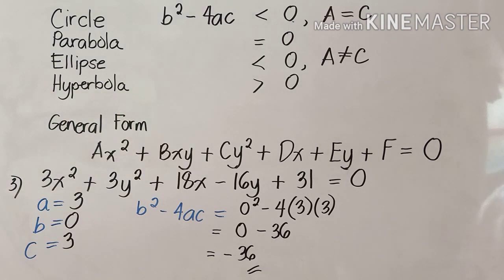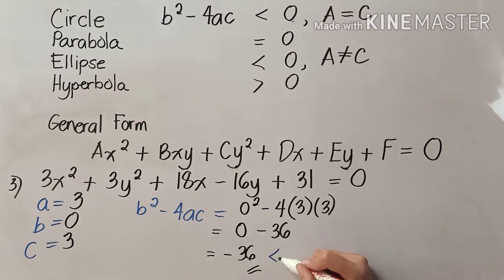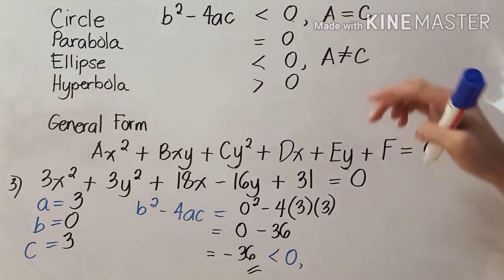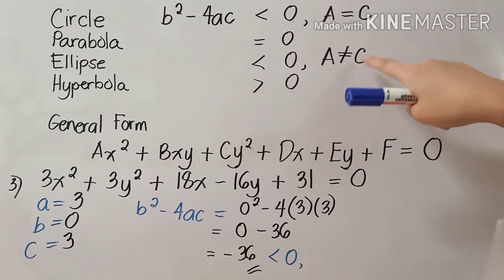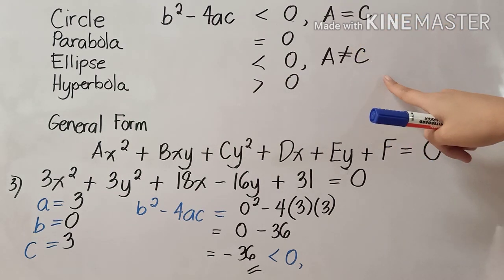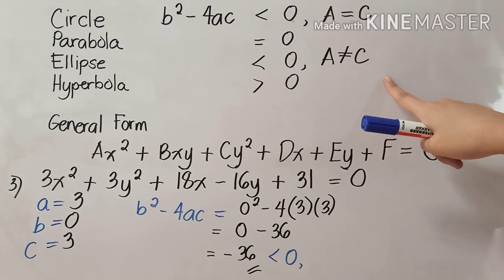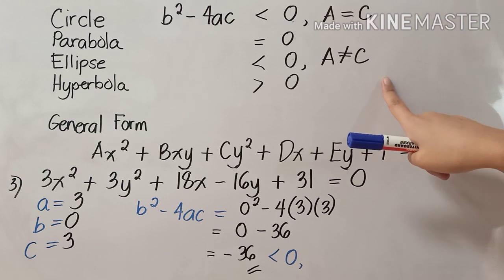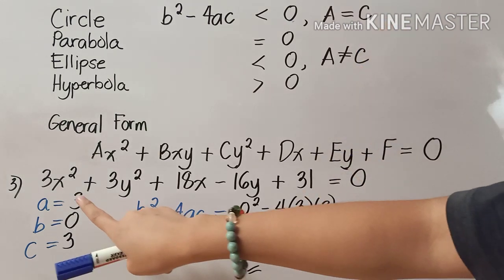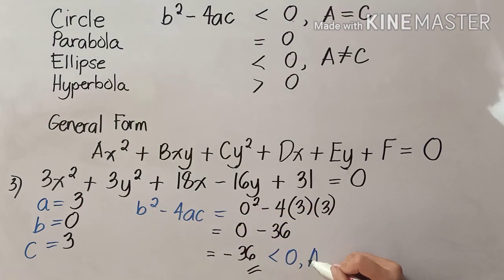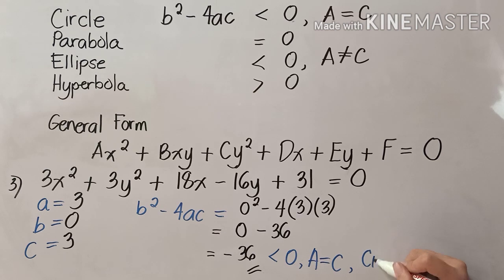As you can see, negative 36 is less than zero. Looking at the values of a and c, both equal 3 in our given, so a equals c. Therefore, this is an equation of a circle.